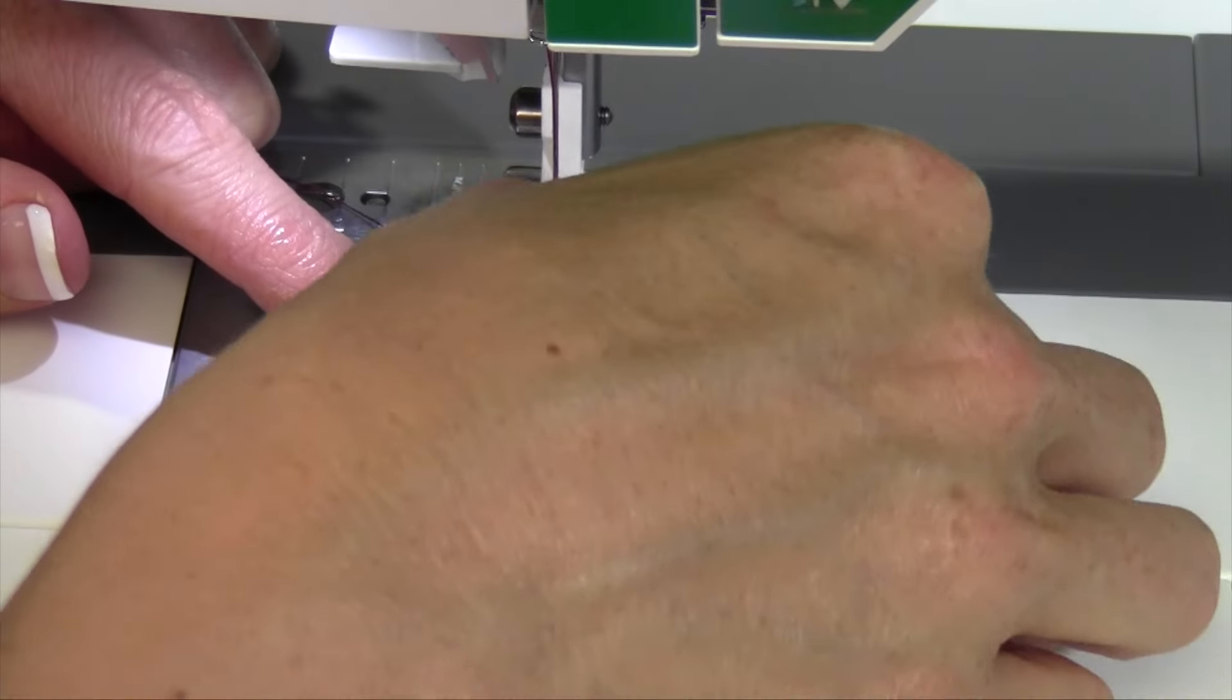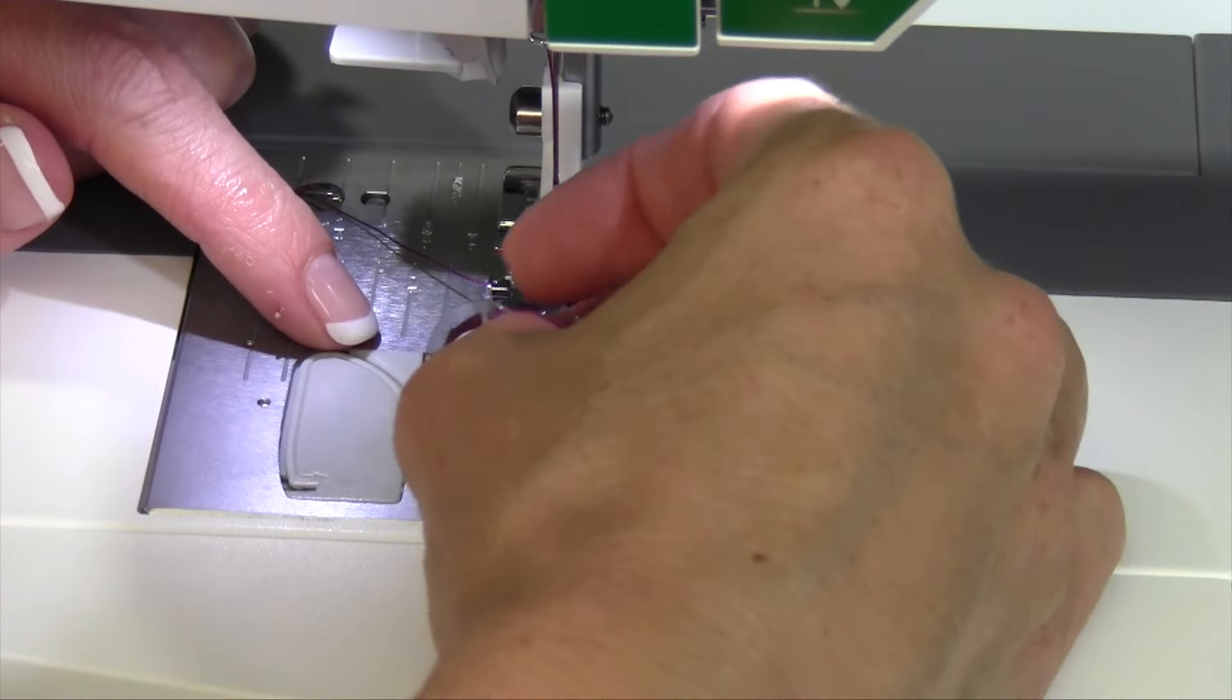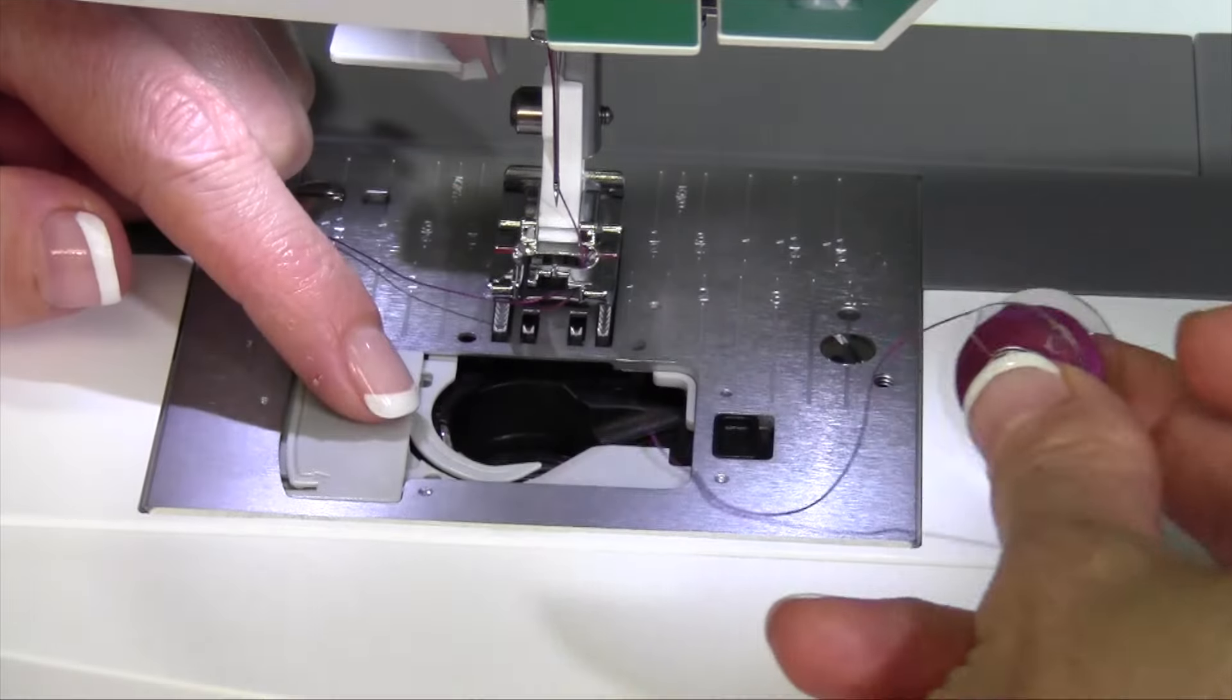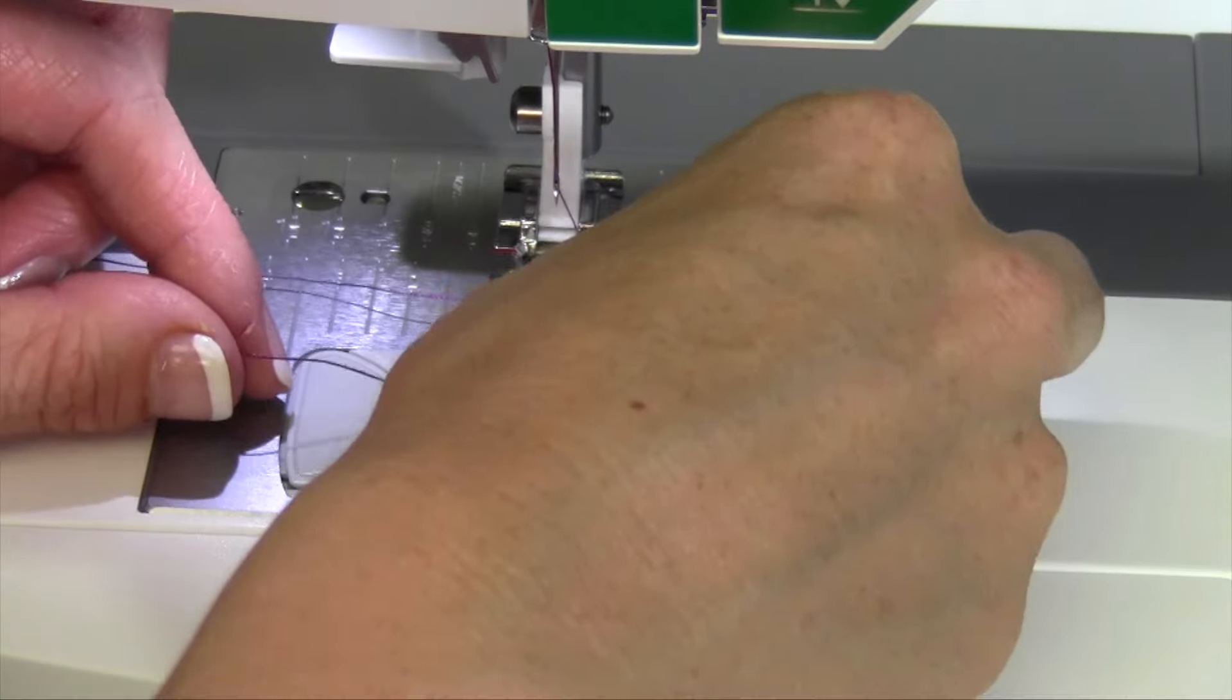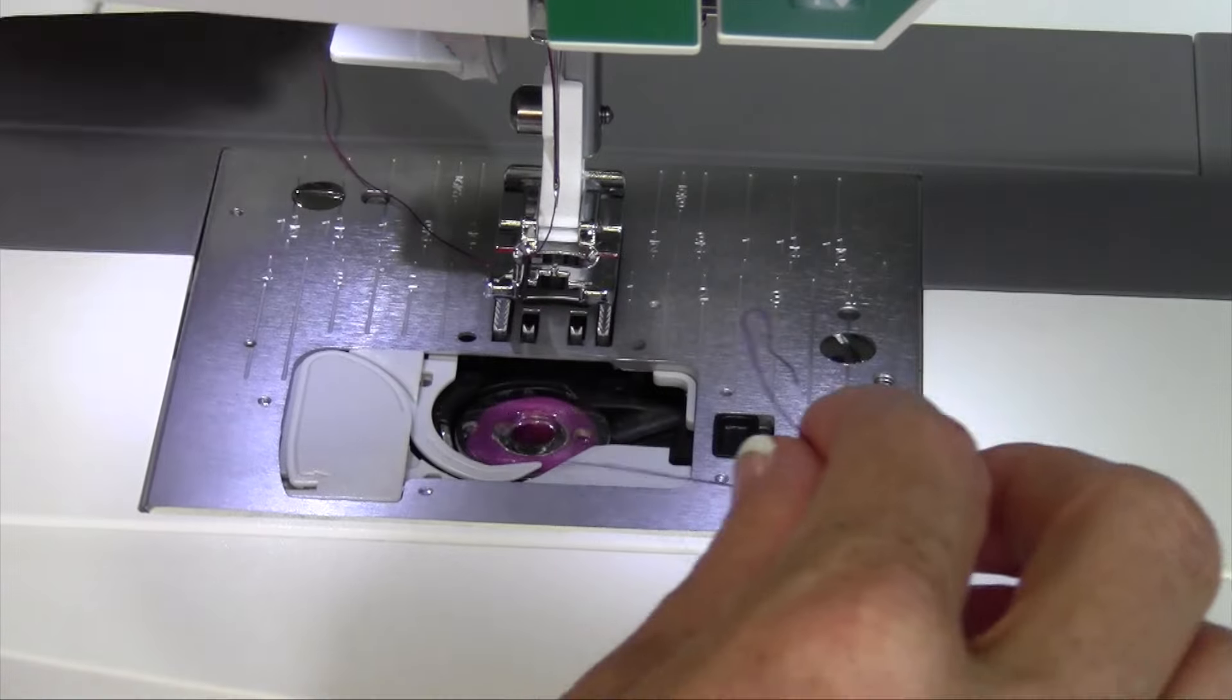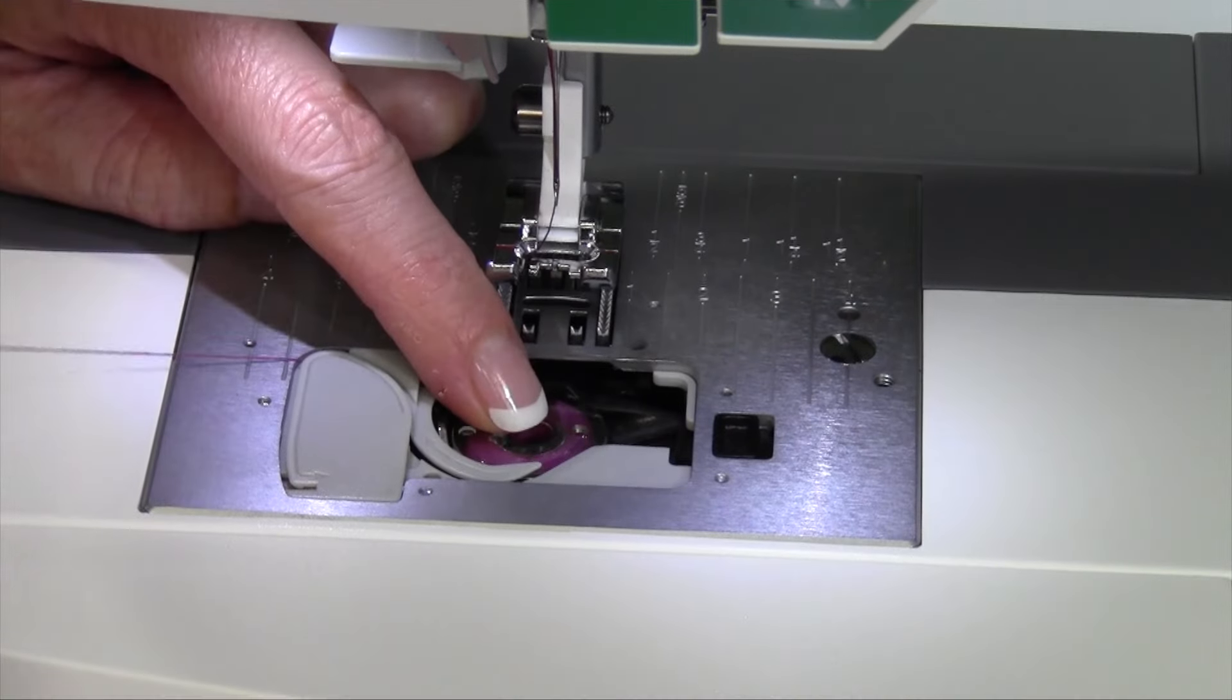When you go to take your bobbin out, you'll notice it does have a little bit of pull to it. That's okay. Just give it a release and that will pull it back out. Just remember, the key is having the bobbin spinning the correct direction when you go to put it in the machine.